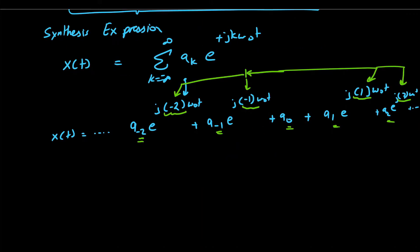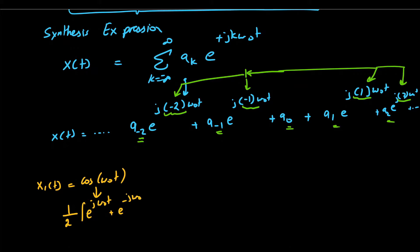Now say we have a function x_1(t) which is simply cos(ω₀t), and we want to find its Fourier series coefficients. From Euler's identity we know that this is simply one-half times e^{jω₀t} plus e^{-jω₀t}.